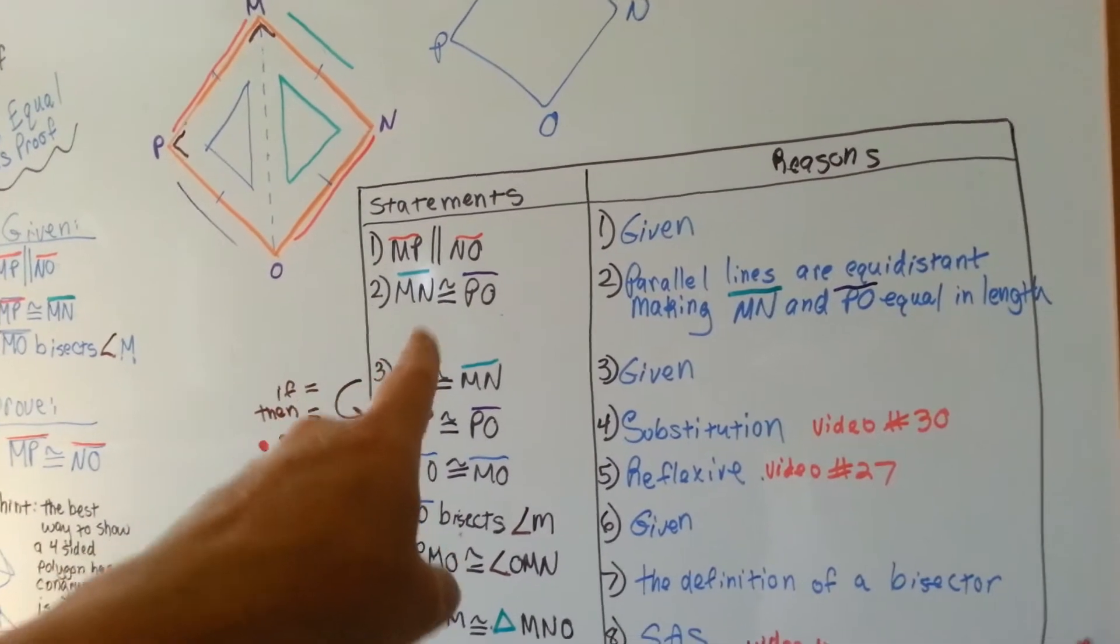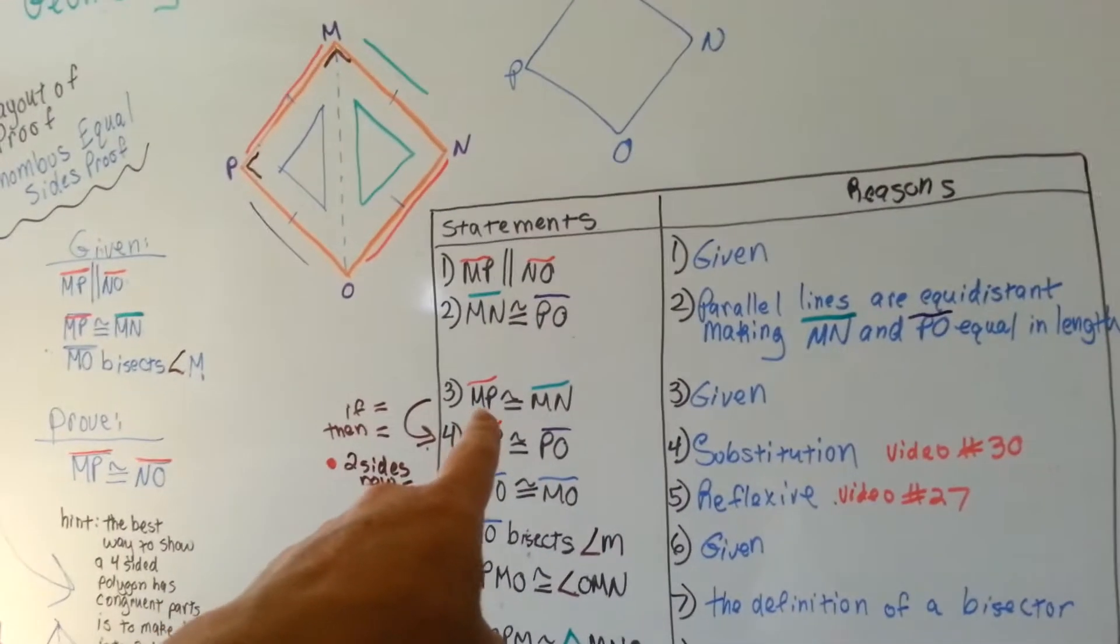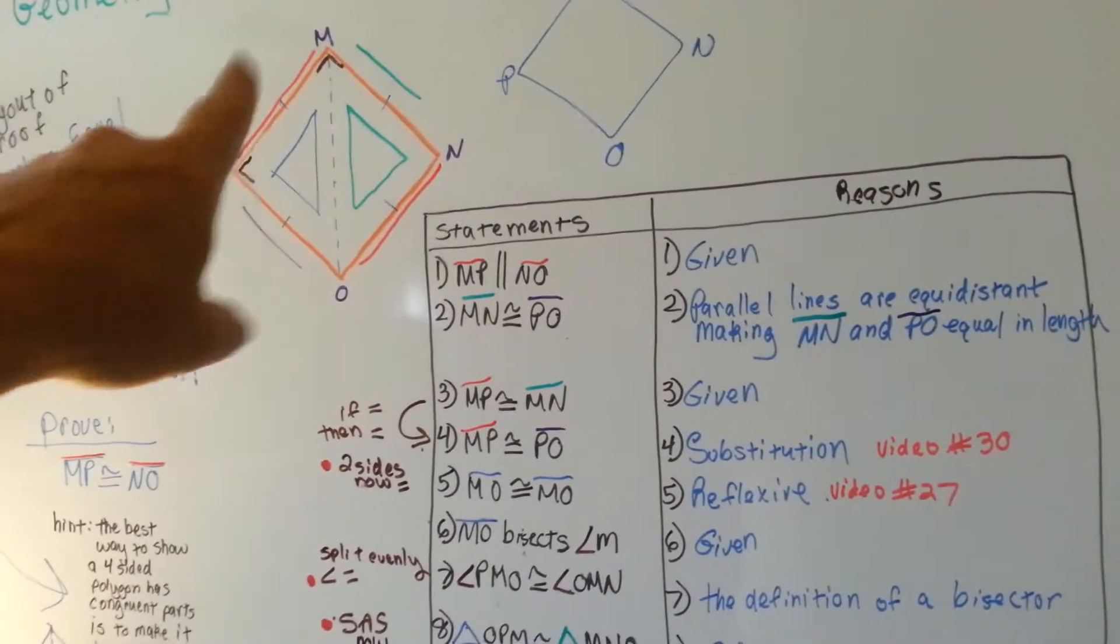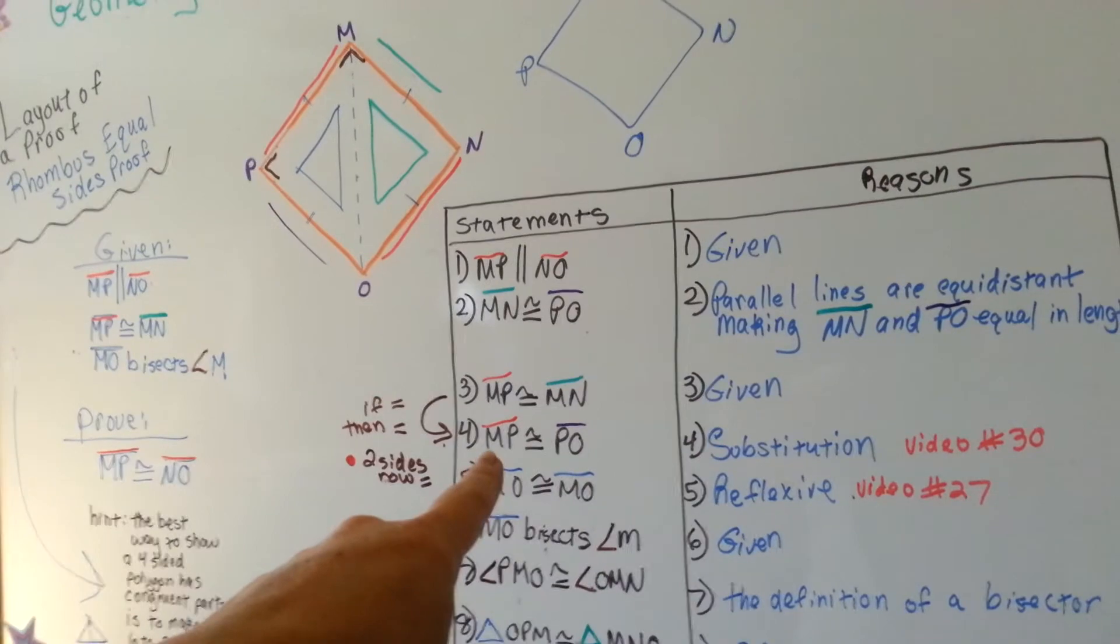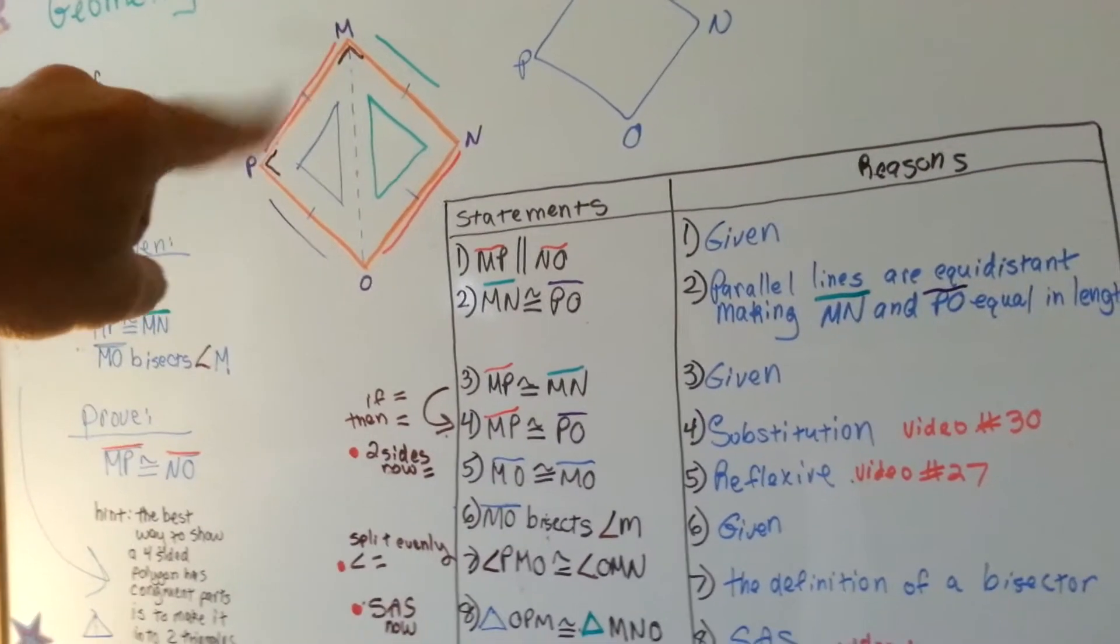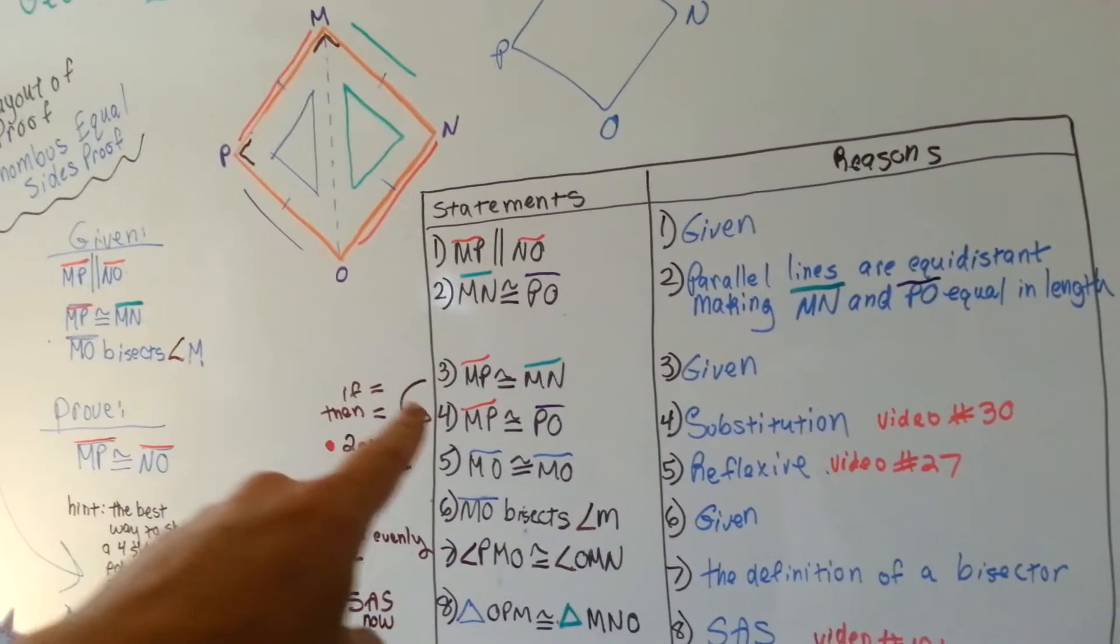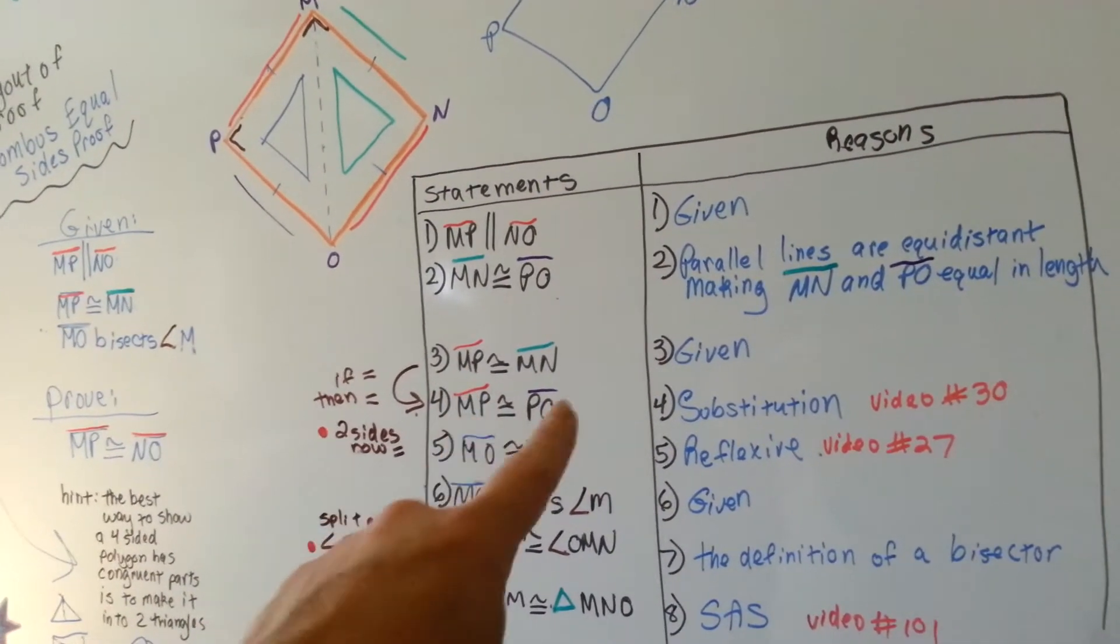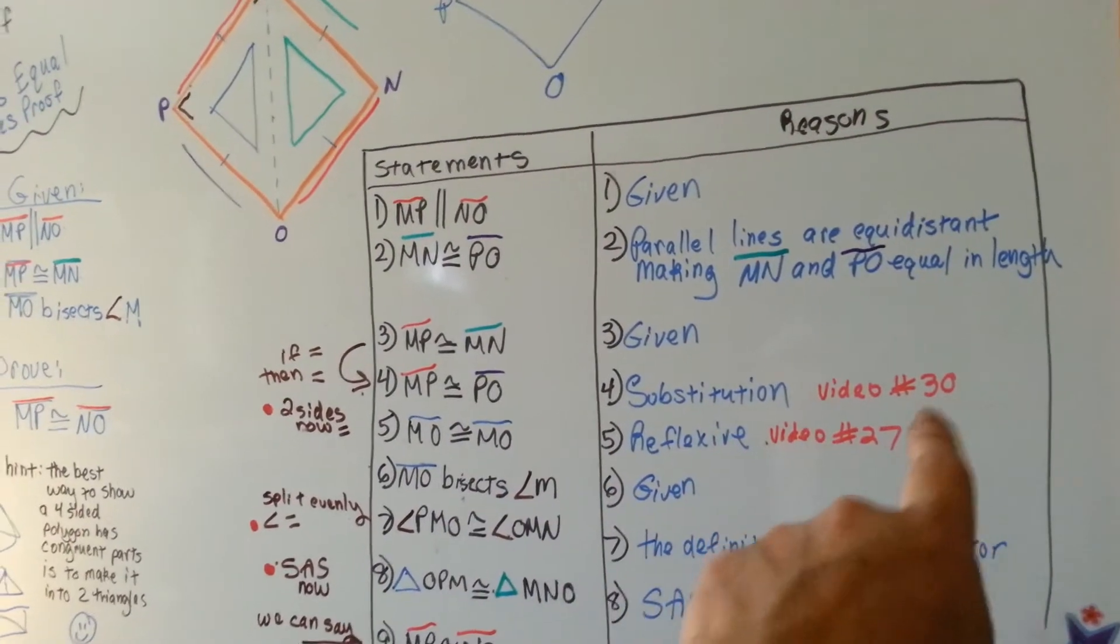If those are parallel, then those are parallel. So now we've got the red one, MP, is congruent to MN. That's given. So that means MP and PO are congruent because if these are congruent, then these are congruent because of substitution. And if you don't know what that is, you can see video number 30.